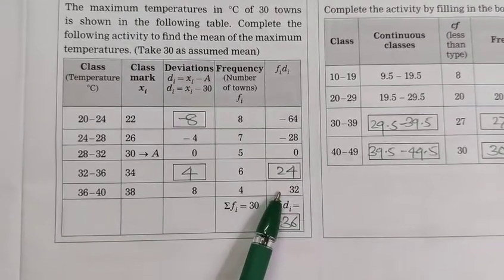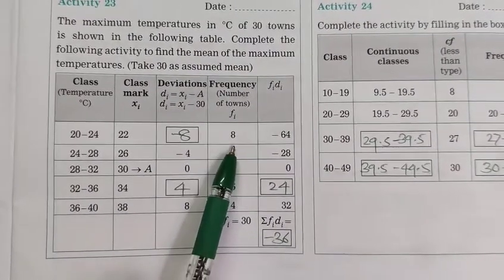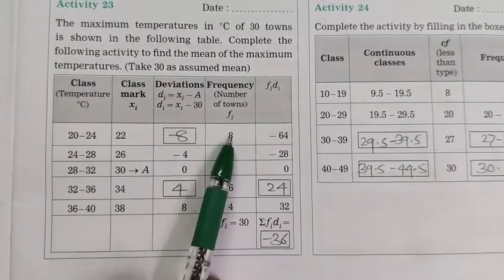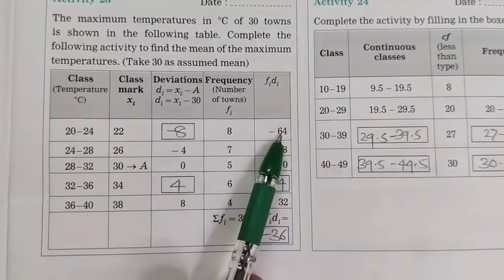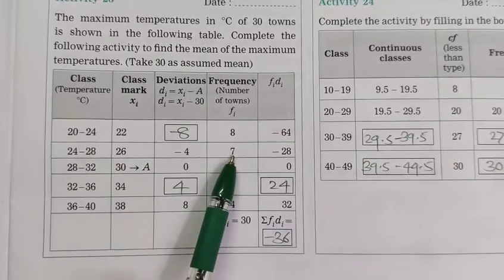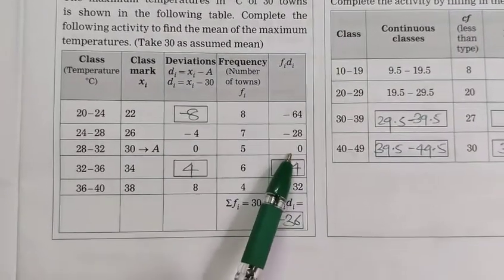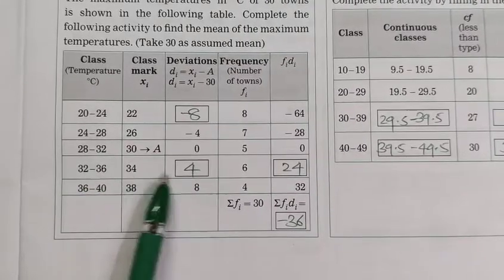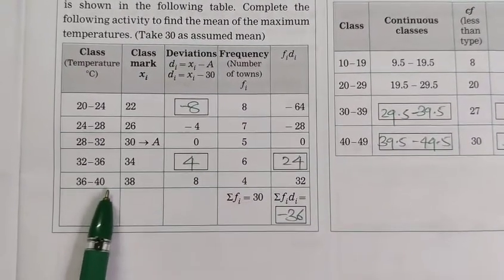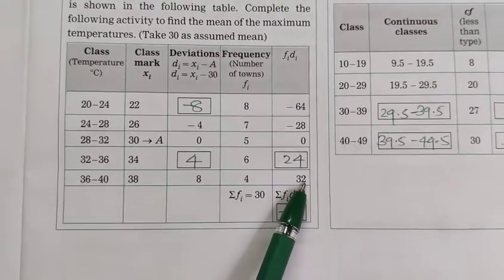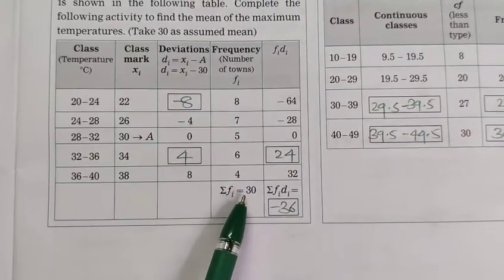In given information we get here 20 to 24, class marks 22, and here 8 and here minus 64, product of these two. 8 into minus 8 equal to minus 64. Here also minus 4 into 7, minus 28. Therefore here 0 into 5 equal to 0. 32 to 36, 34, here 6 into 4, 24. And 36 to 40, 38, 8, 4, 32. Therefore summation of fi equal to 30, sum of this 8, 7, 5, 6, and 4.